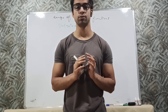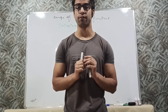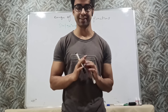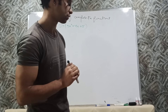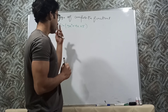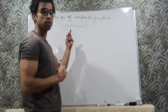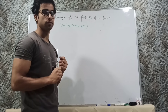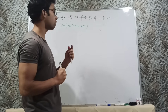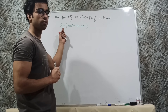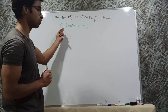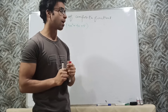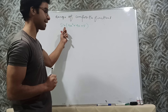Today we'll talk about how to find the range of composite functions — some complicated composite functions. Whenever we try to find the range of a composite function, we always have to worry about how the graph of the outer function looks. In this case, the outer function is sine.